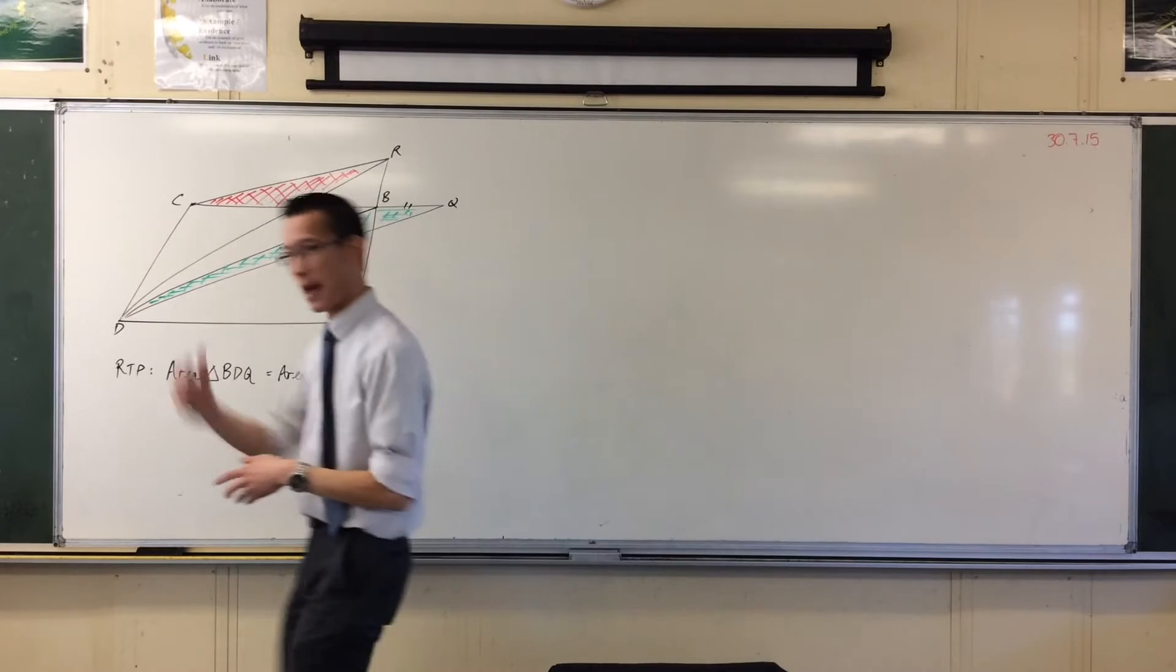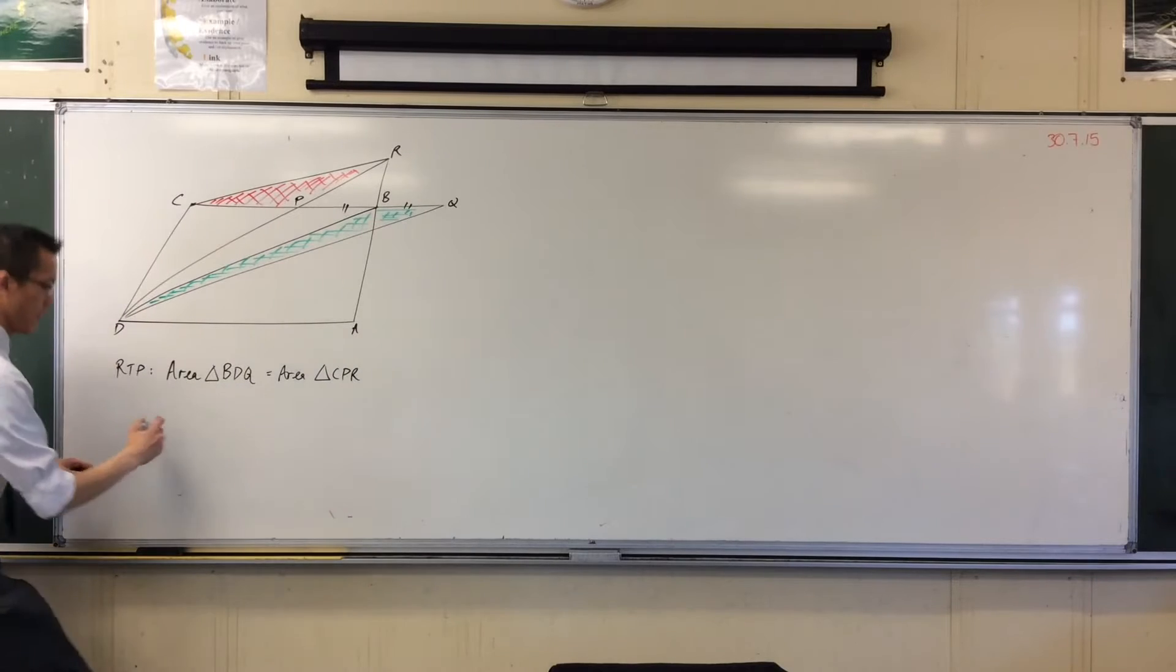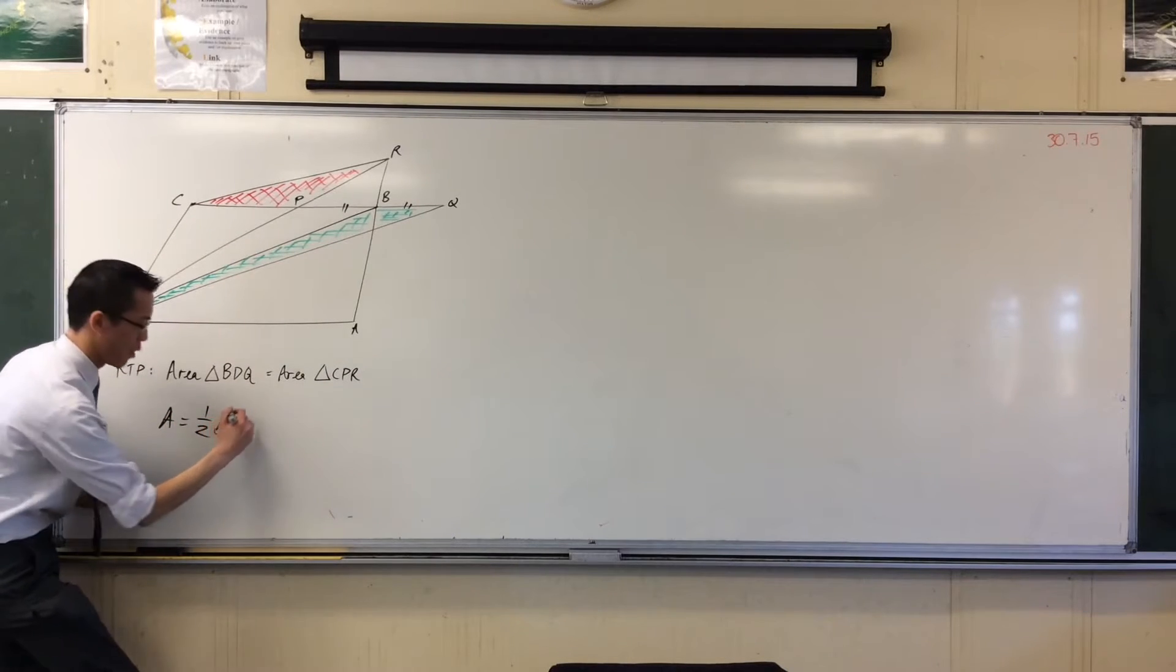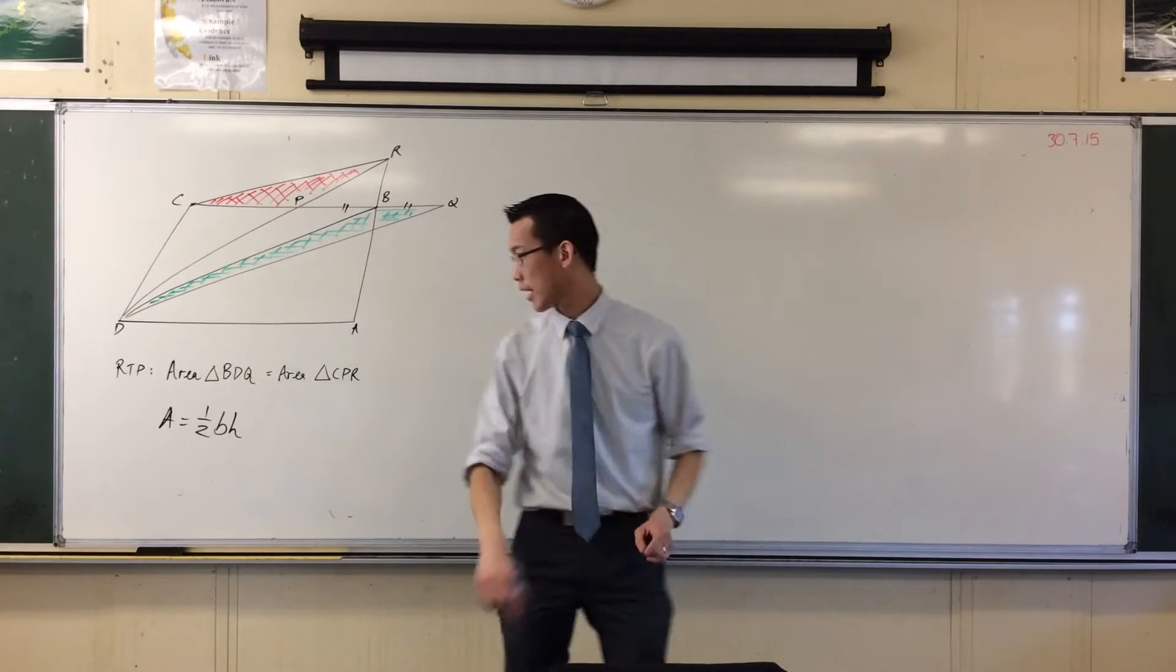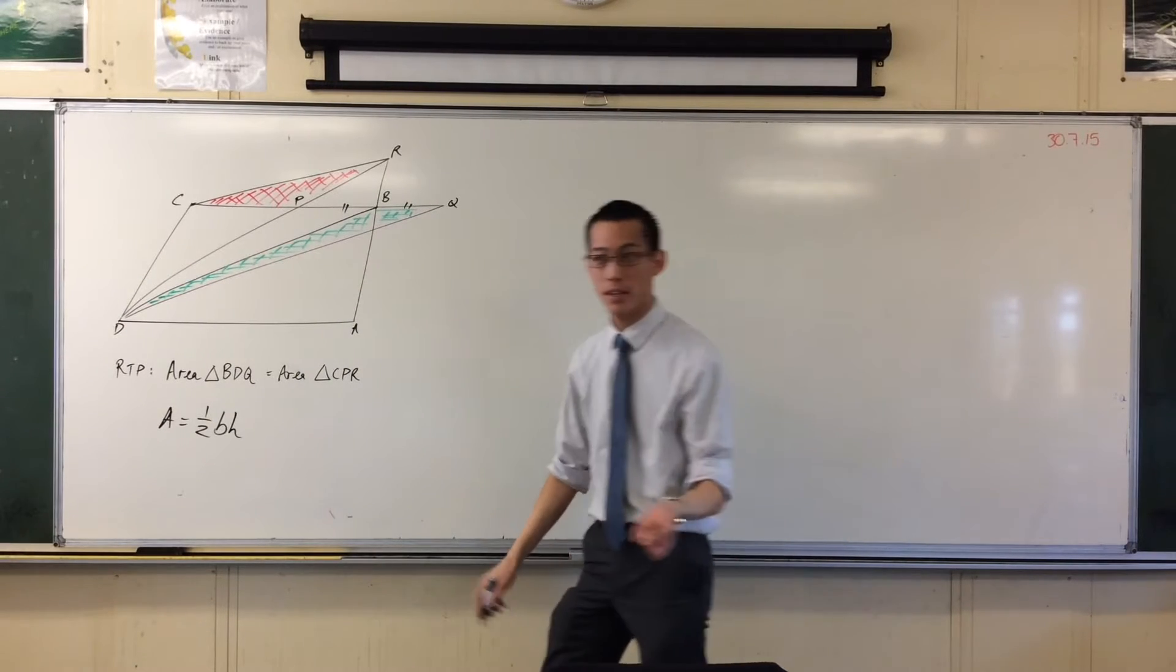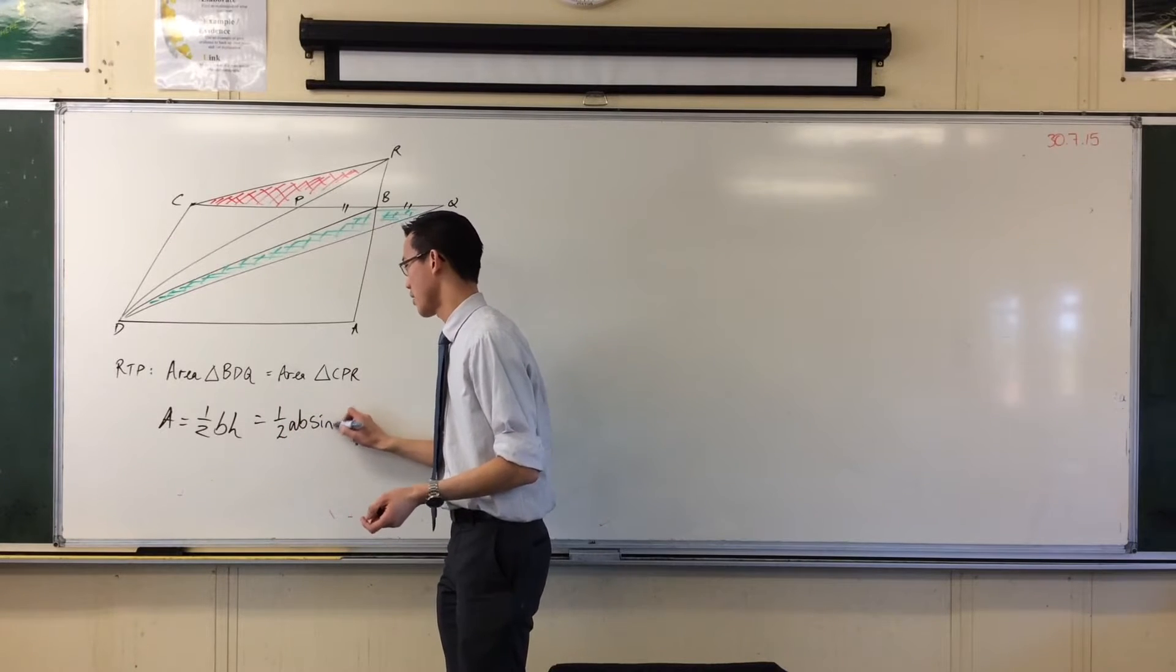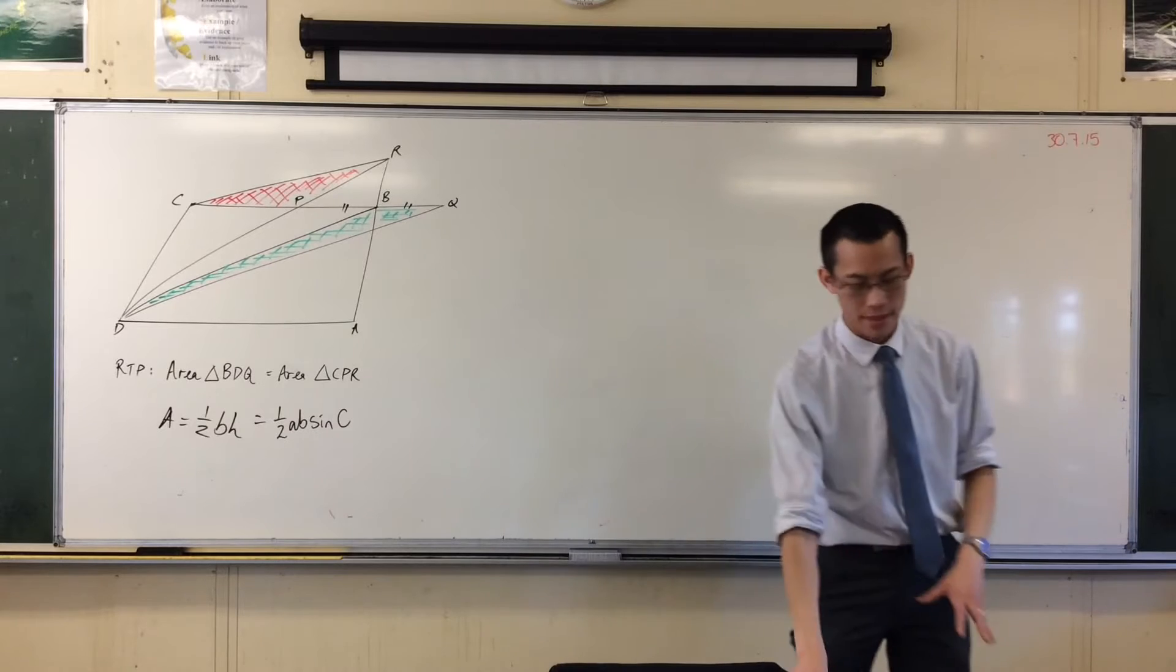What's the first way you learned back in year seven? Area equals half base times perpendicular height, right? That's one way. Your other way, of course, is you've learned all this fancy trick stuff, right? Which allows you this other method.